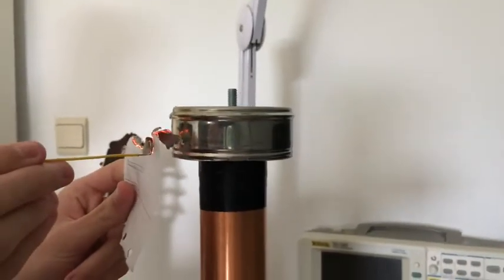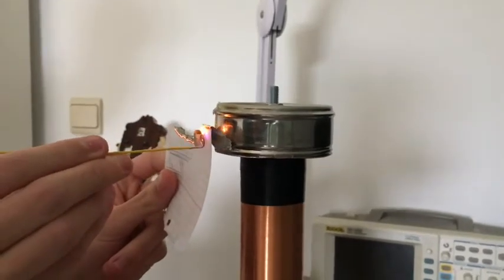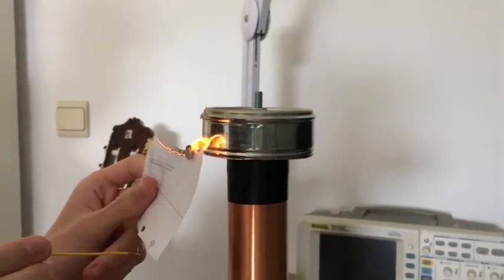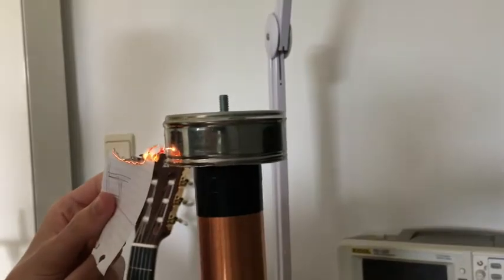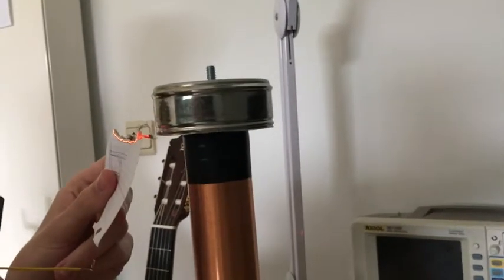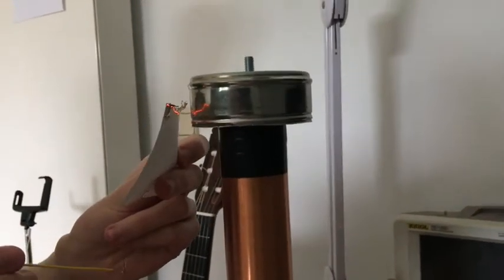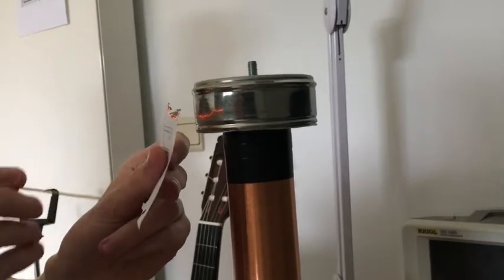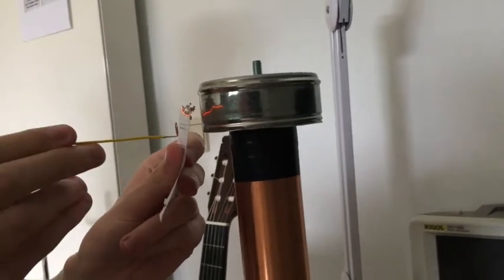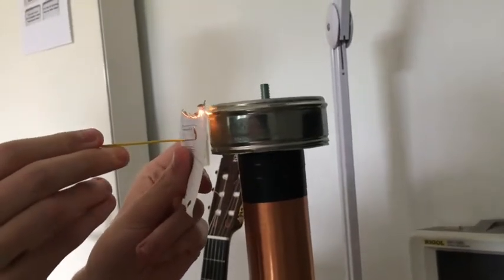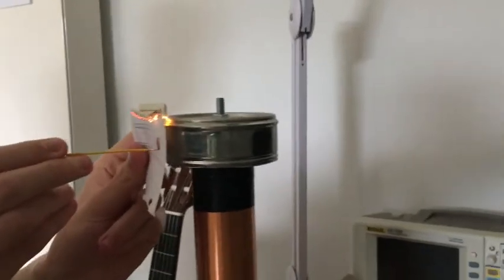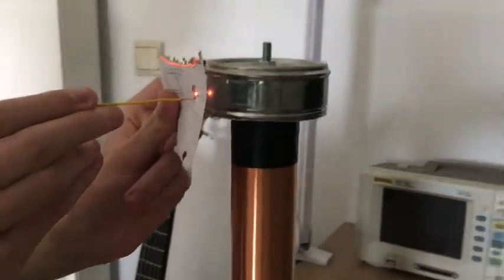So we were surprised at first but after thinking about it, it's quite logical I think. When the paper burns it becomes charcoal and the charcoal then becomes conductive and because of the conductivity it will start arcing with the Tesla coil itself.